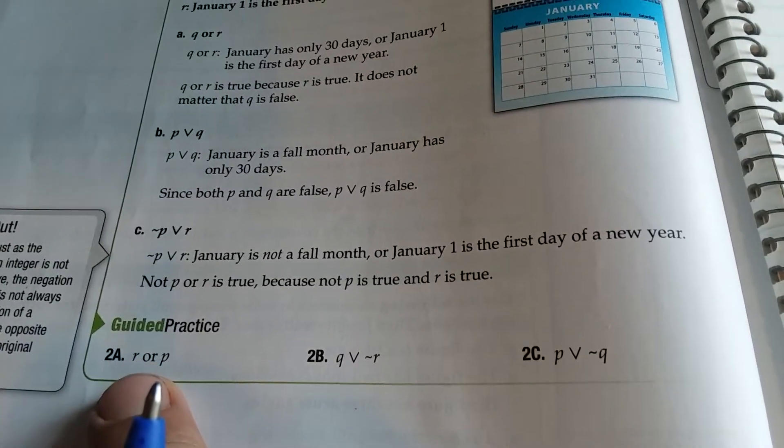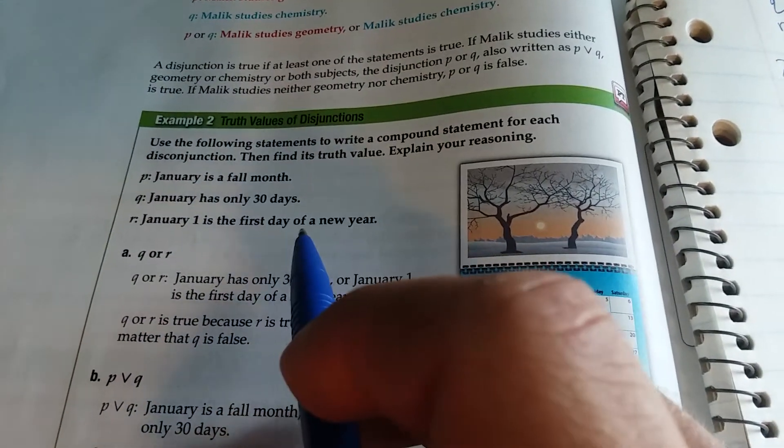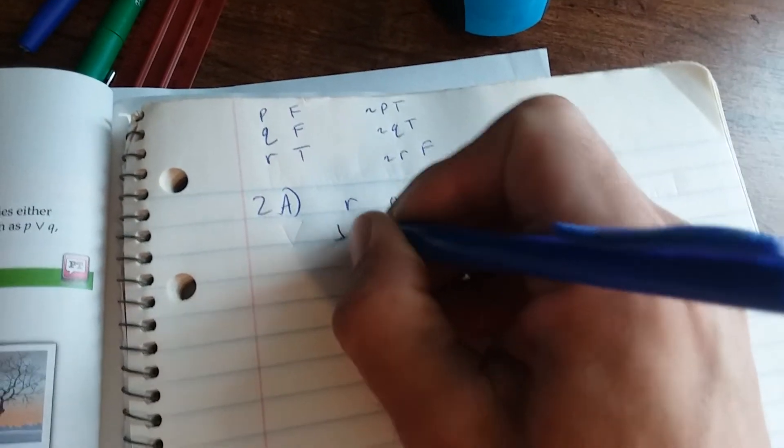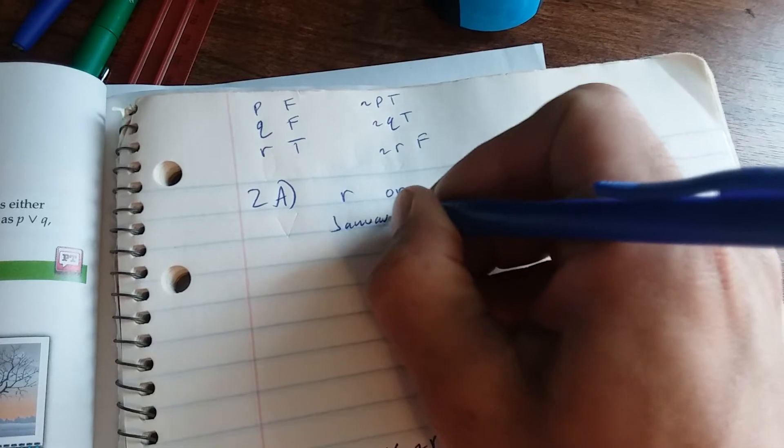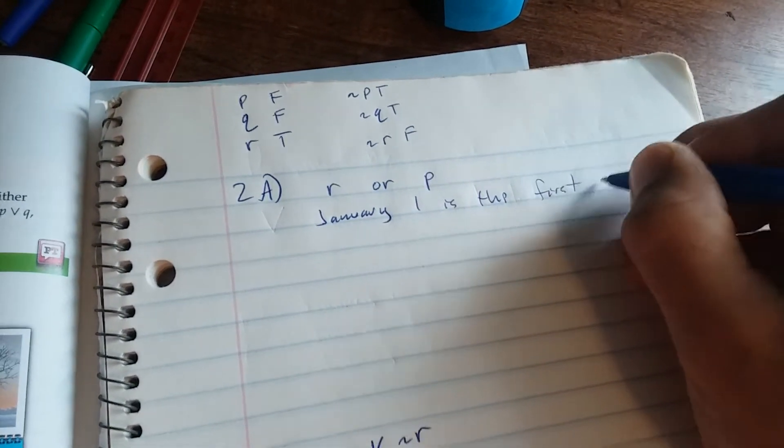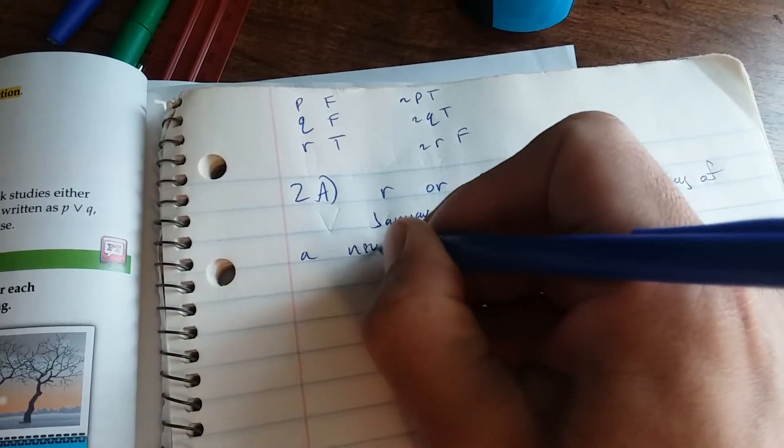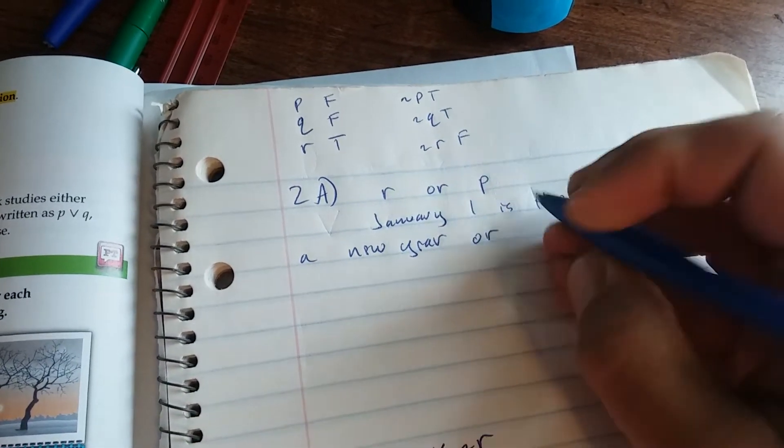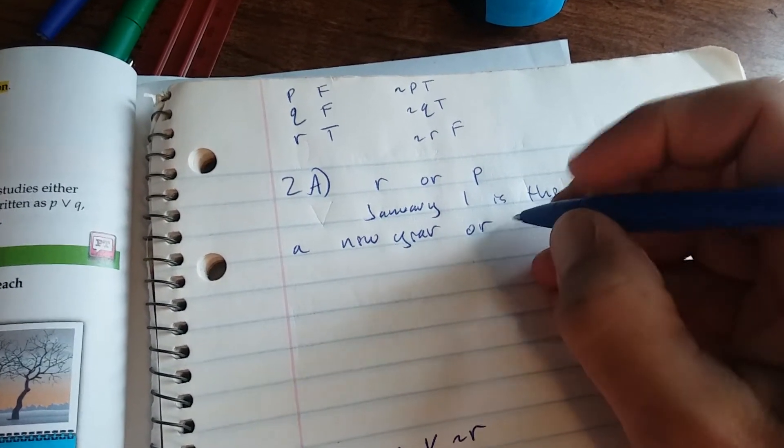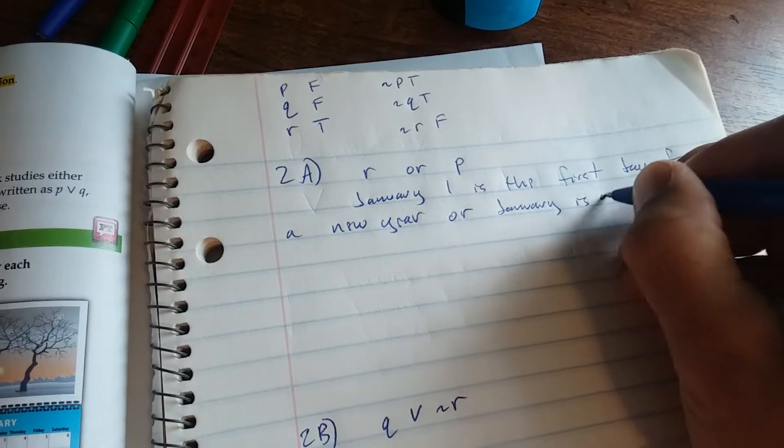We have R or P. So January 1st is the first day of the new year, or January is a fall month.